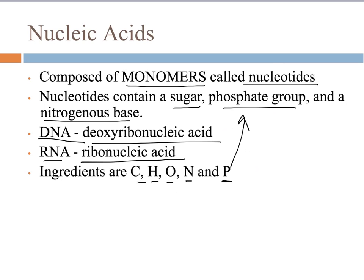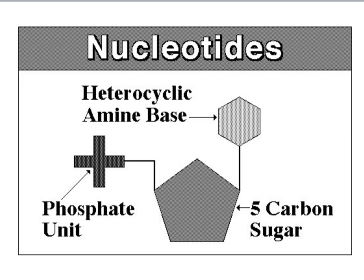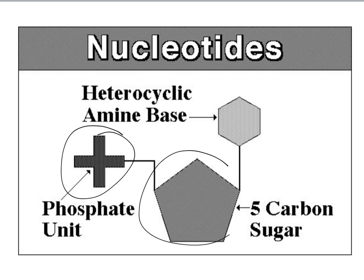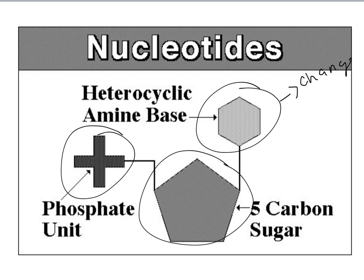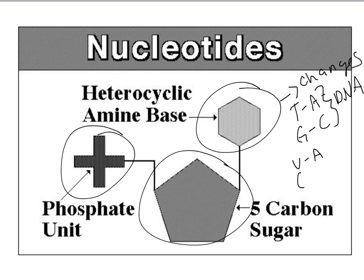You don't need to write down redundant information. Here's a picture of a nucleotide: the phosphate group, the sugar, and the nitrogen base. The nitrogen base is the important part — it's the part that changes, and there are four of them. In DNA: thymine, adenine, guanine, and cytosine. In RNA: uracil (U) and adenine (A), guanine (G) and cytosine (C).